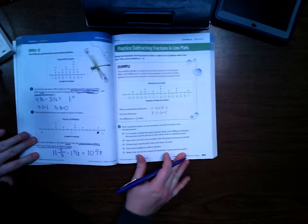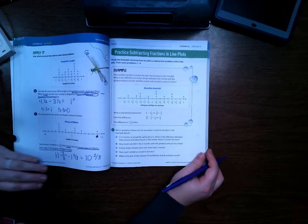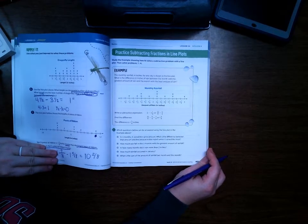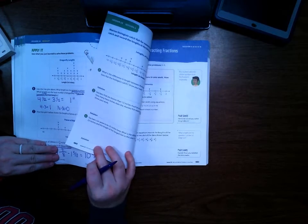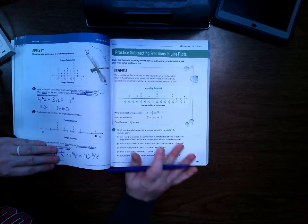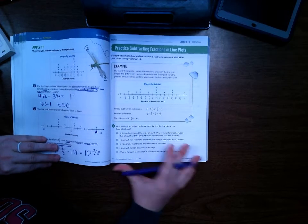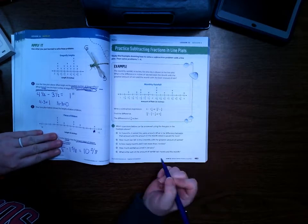We're going to be adding and subtracting fractions on the line plot. If you feel like you're getting the hang of adding and subtracting fractions on the line plot, go ahead and complete 283 and 284 on your own. Hopefully by this point you are getting the hang of it and you can do this on your own.